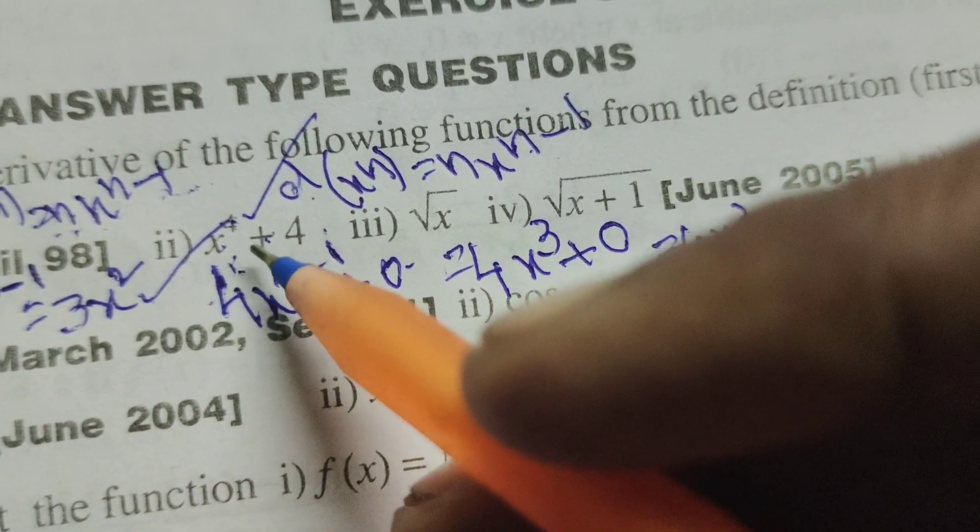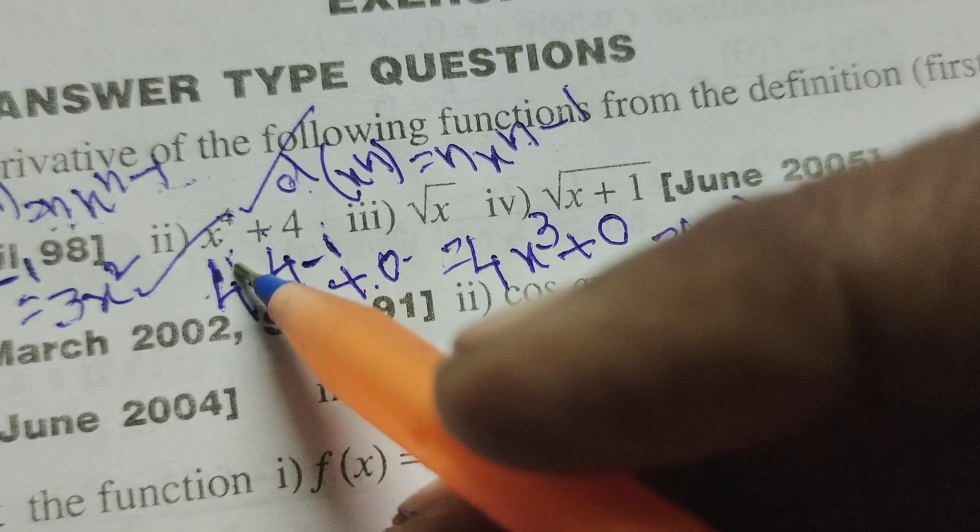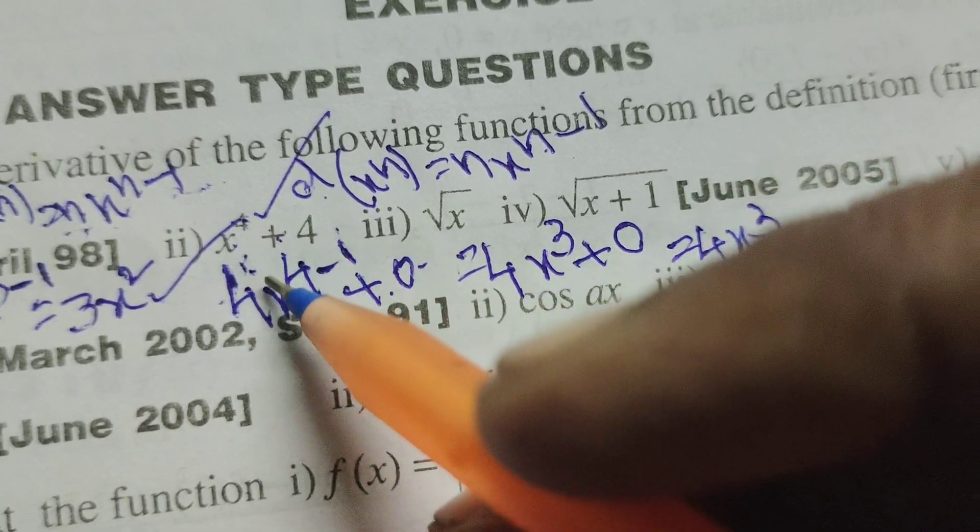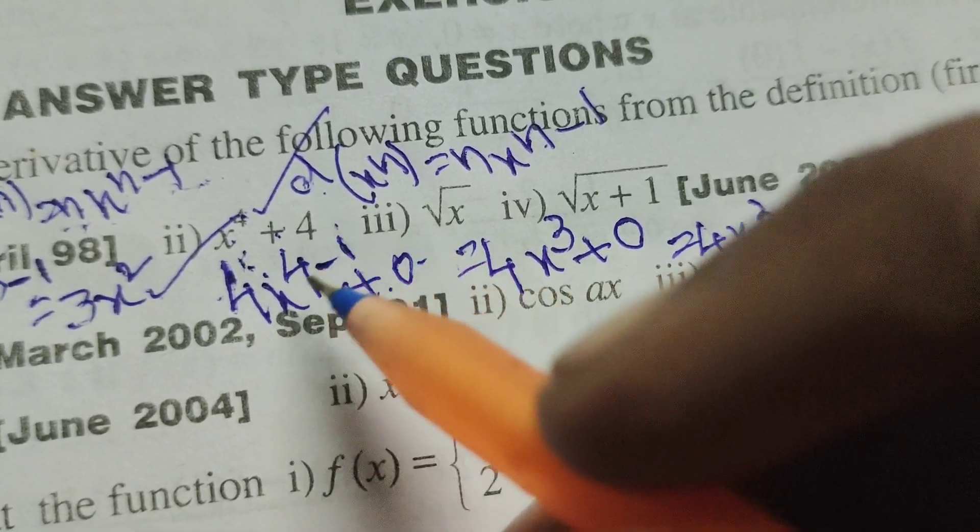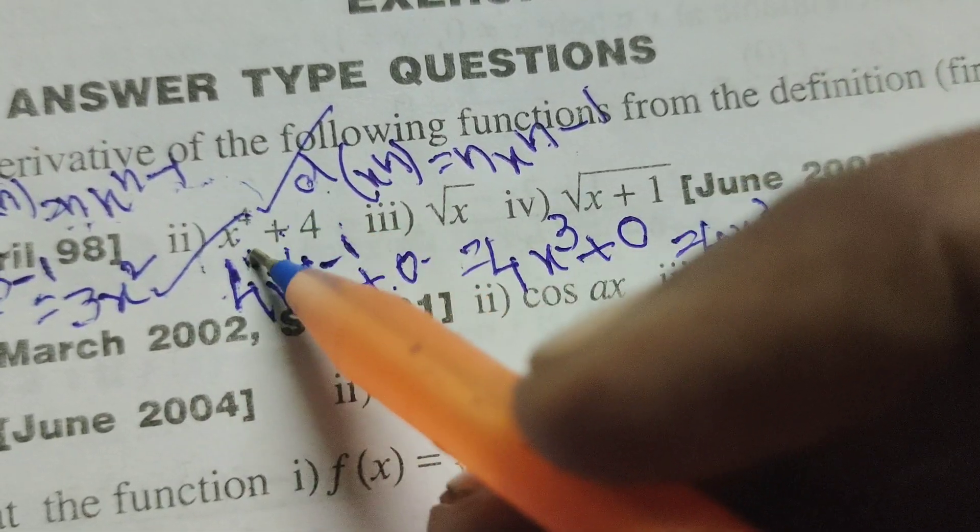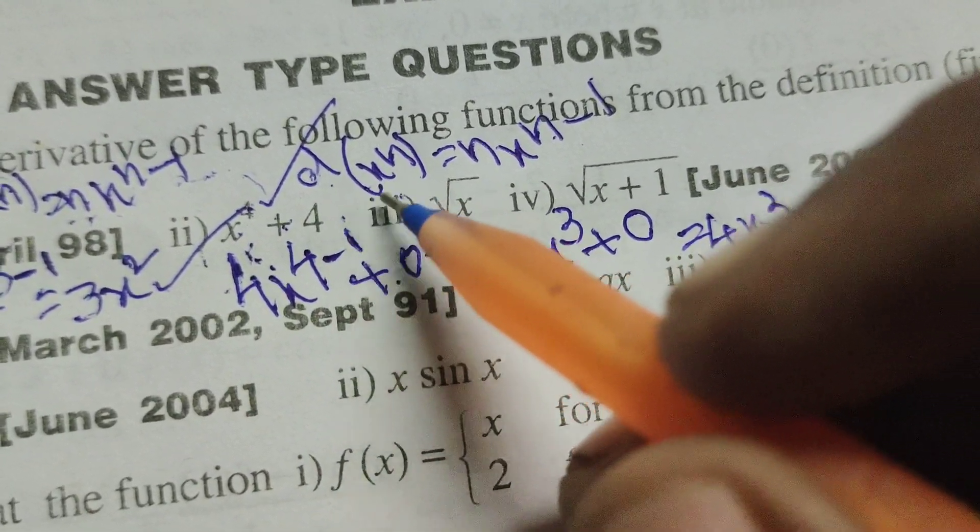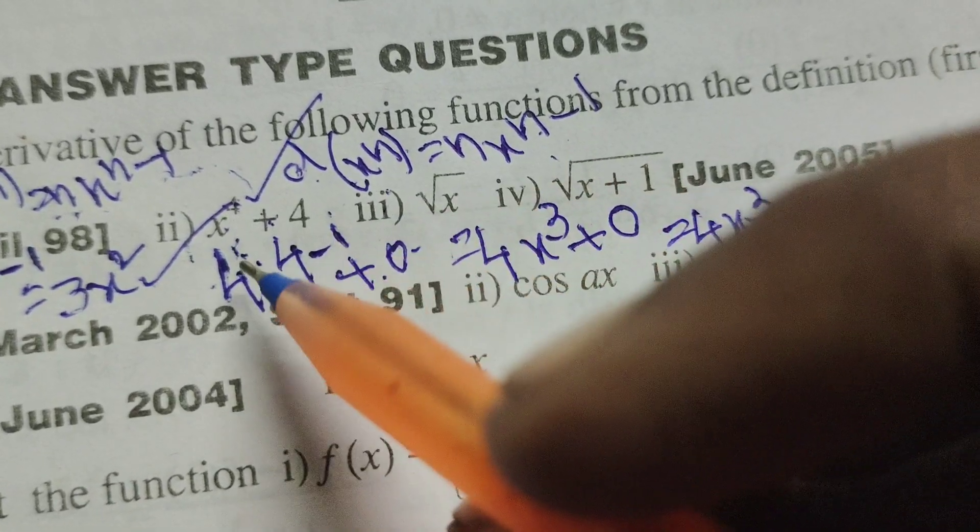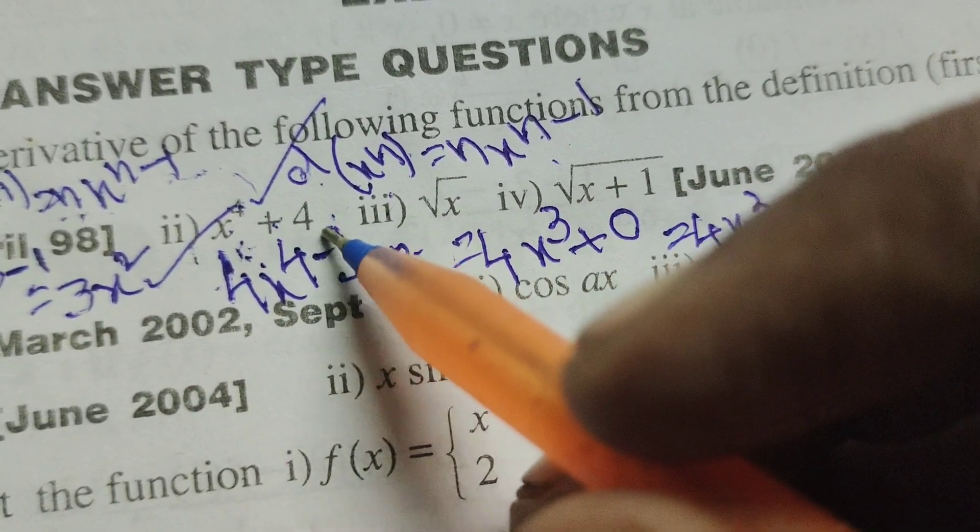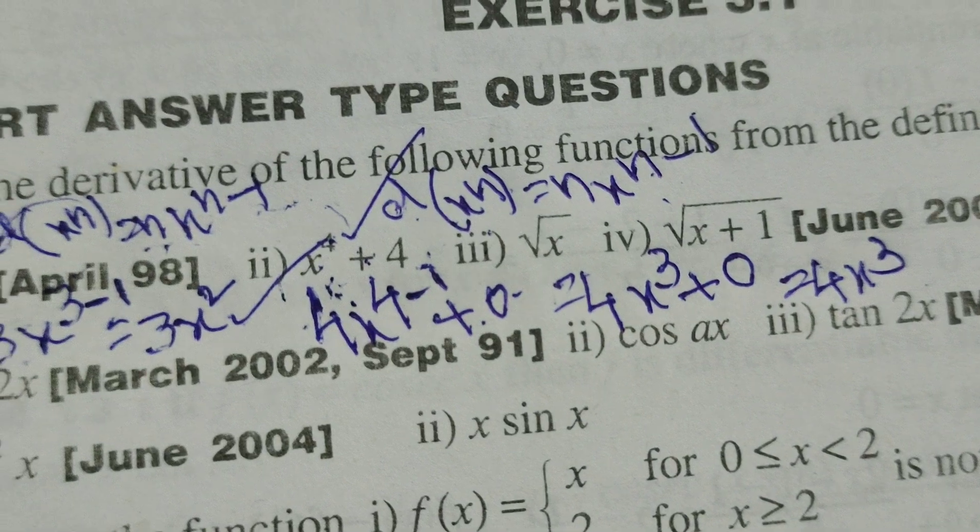By the given problem, x^4 + 4. Here, only differentiating x^4 using this formula, differentiation of x^n. And differentiation of 4 means constant, that is 0. Thank you.